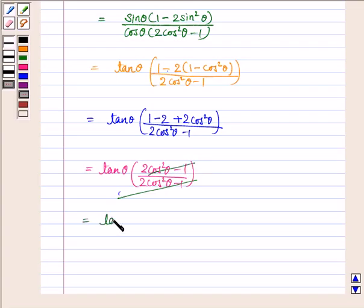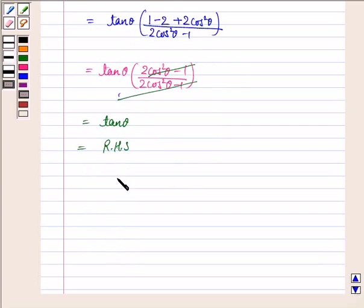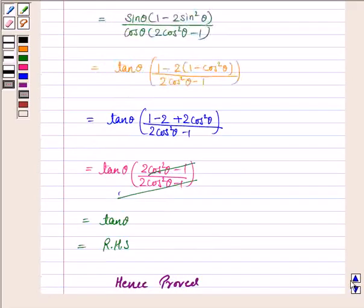Now this is equal to tan θ into 1 minus 2 is minus 1 plus 2 cos square θ. So it is 2 cos square θ minus 1 upon 2 cos square θ minus 1.